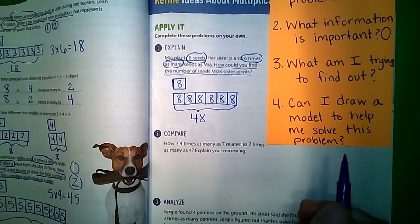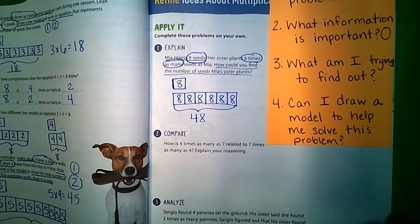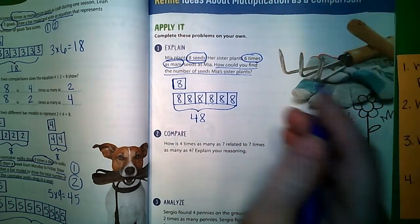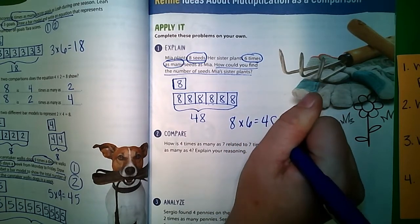48. And so this would be how you would solve that problem. And you could also write it as eight times six equals 48.